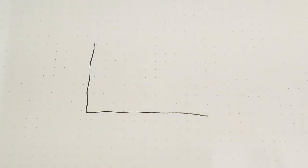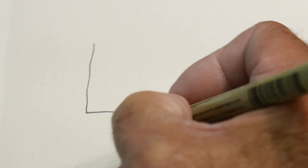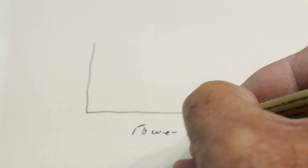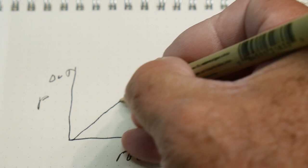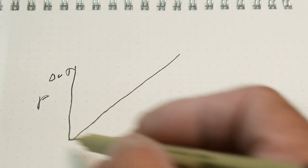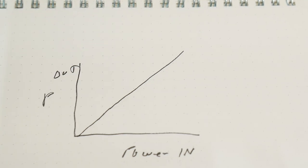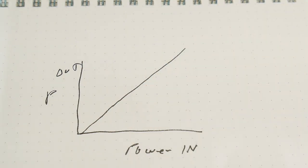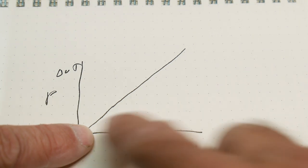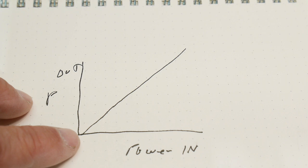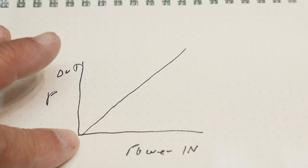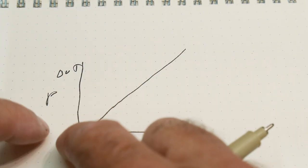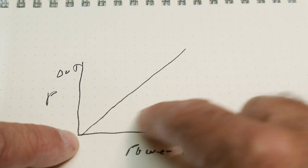If we draw a graph of power in and power out, if you had nothing in the circuit, you'd get a line like this - for every amount of power that you increase, you get power on the output as well. If you have an attenuator, then the power in versus power out will follow a straight line but it'll be lower down. So with a 6 dB attenuator, you're going to attenuate the signal 6 dB and your power out will be 6 dB lower than the power in.